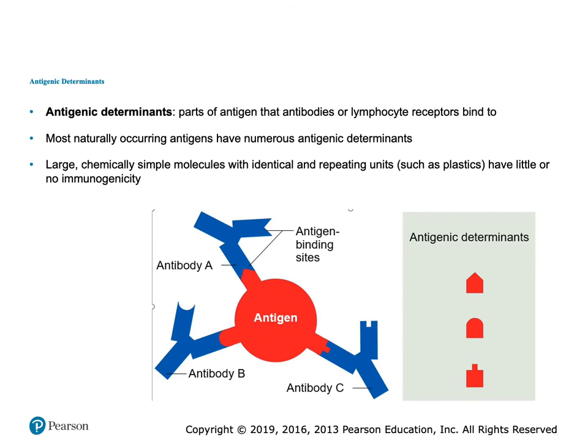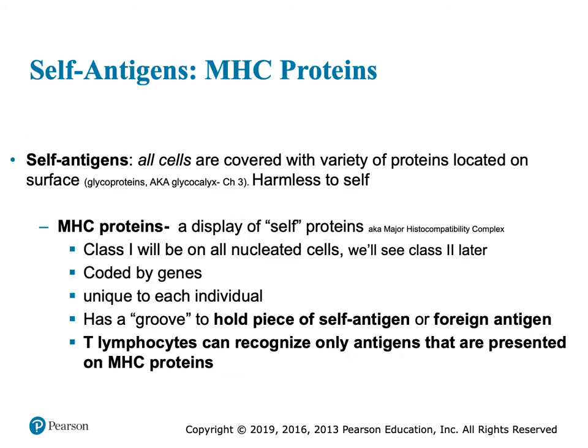Crazily, some antigens actually have multiple little antigenic determinants. We've got to bind to each and every one of them in order for that antigen to be immobilized and non-destructive. That's why our adaptive immunity — the B cells and T cells — they have to go to school. You've already met self-antigens in the blood. Our cells are covered with stuff that makes us us. Those self-antigens are harmless to ourselves.